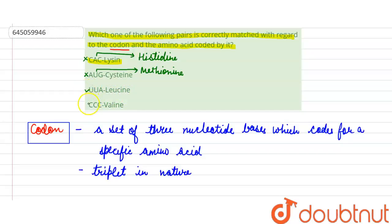And the last option is CCC which codes for valine. Here this option is also incorrect because CCC codes for proline instead of valine. So the correct answer will be C. Thank you students.